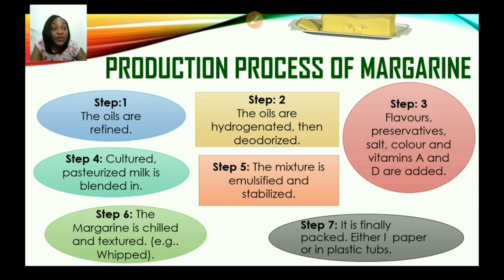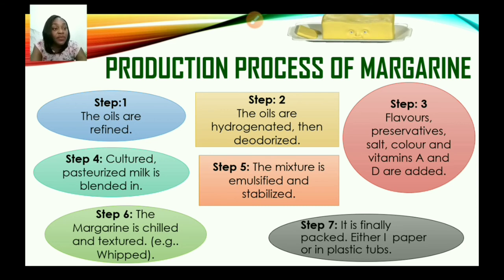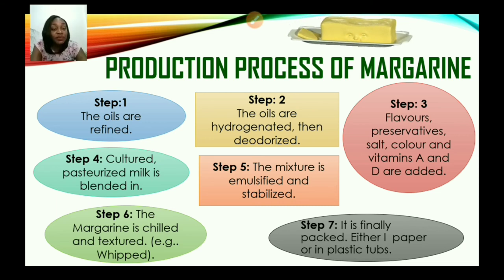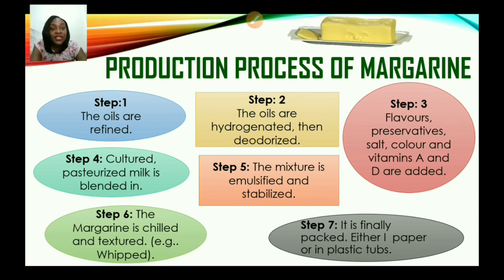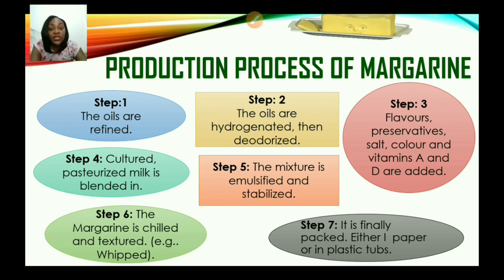Step one: the oils are refined. Step two: oils are hydrogenated — depending on how solid or semi-solid they want the margarine, the amount of hydrogen may be altered — and then deodorized to remove any undesired flavor. Step three: flavors, preservatives, salts, colors, and vitamins A and D are added, meaning it is fortified with vitamins A and D. Step four: cultured pasteurized milk is blended in — pasteurizing kills harmful microorganisms. Step five: the mixture is emulsified and stabilized to prevent the contents from separating. Step six: the margarine is chilled and textured. Step seven: it is finally packaged whether in paper or in tub.